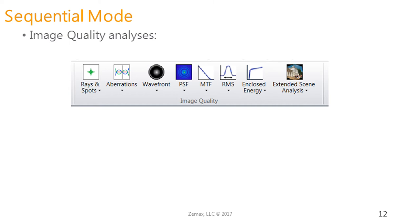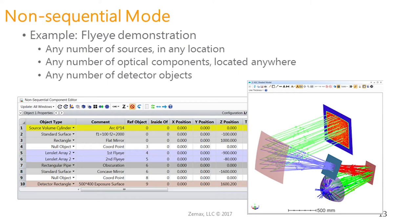Now changing gears to non-sequential mode. I'm going to open up a sample fly's-eye demonstration system. The three key things that distinguish non-sequential mode from sequential mode are: instead of one object plane, we insert source objects — we can have any number of source objects in any location; we can have any number of optical components located anywhere, with lenses defined as a single object rather than a front and back surface; and we can have any number of detector objects instead of a single image plane.